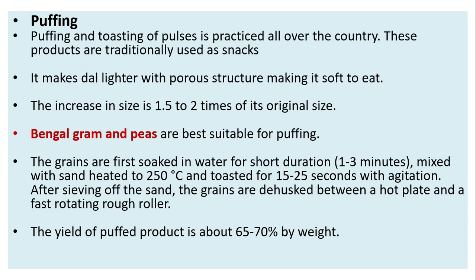Puffing and toasting of pulses is practiced all over the country. These products are traditionally used as fresh snacks. Puffing makes dal lighter with a porous structure, making it soft to eat, and increases its size to 1.5 to 2 times its original size. Bengal gram and peas are best suitable for puffing. The grains are first soaked in water for a short duration of 1 to 3 minutes, mixed with sand heated to 250 degrees Celsius, and toasted for 15 to 25 seconds with agitation. After sifting off the sand, the grains are dehusked between a hot plate and a fast-rotating rough roller. The yield of puffed product is about 65 to 70 percent by weight.